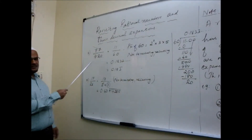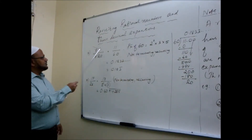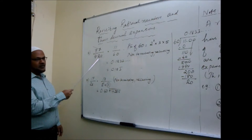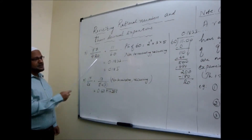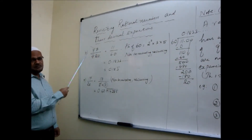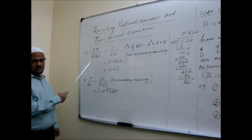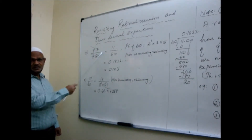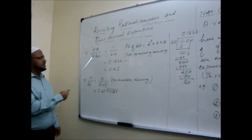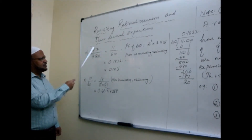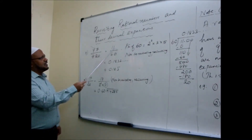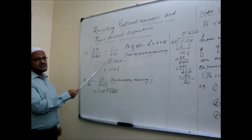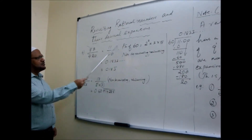Come to Example 4. We have 77 by 420. First of all, you have to make sure it is in the simplest form. Is it? No. What is the common divisor? 7. Dividing by 7, canceling by 7, we get 11 by 60. Now it is in the simplest form.